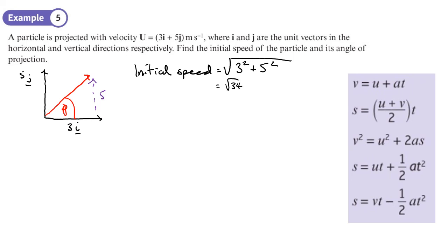And the angle of projection, well that's just going to be the tan inverse of five over three, the opposite over the adjacent. So tan inverse five over three and I'll get 59.03624 degrees. So three significant figures would just be 59.0 degrees for our angle of projection. Okay, you can now do exercise 6b on pages 112 to 113.